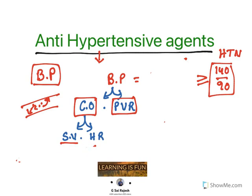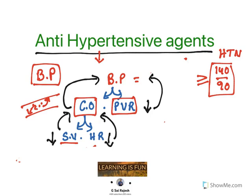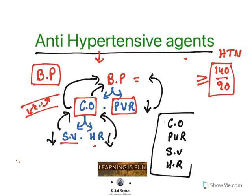In order to control blood pressure, if you reduce peripheral vascular resistance, you will reduce BP. Or if you reduce cardiac output, you will reduce BP. You can reduce stroke volume to reduce cardiac output, or reduce heart rate to reduce cardiac output and further reduce BP. So the major determinants of blood pressure are cardiac output, peripheral vascular resistance, stroke volume, and heart rate. All antihypertensive agents will be targeting one or more of these components.